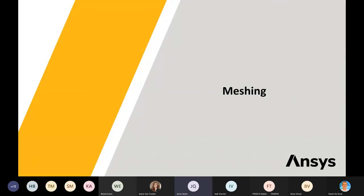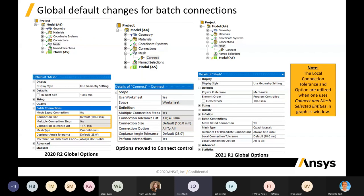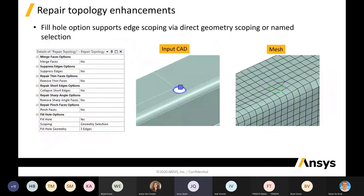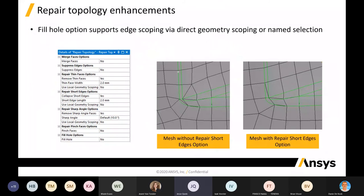On to meshing. If you use batch connections or mesh-based connections, the global options that were previously present have moved into a connection control branch — all the same settings are still there, just in a different area. They've also made enhancements to the repair topology. For hole fill, you can now select an edge to scope it to. It also supports edge scoping and repair short edges options, which gives us fewer elements and makes things more computationally efficient.